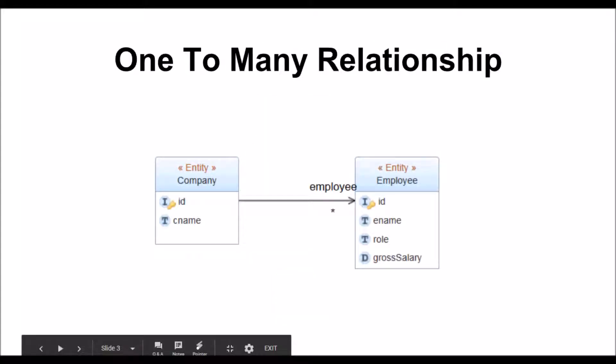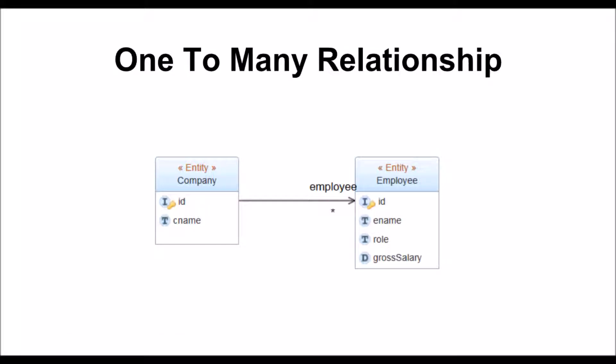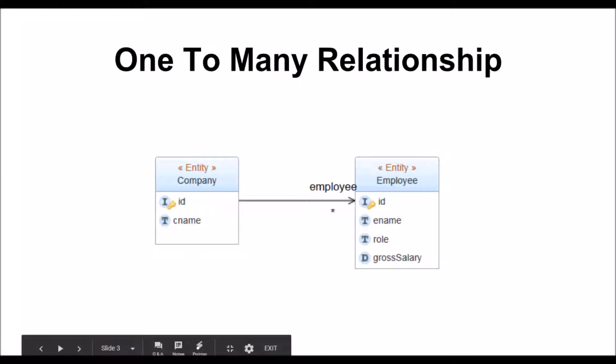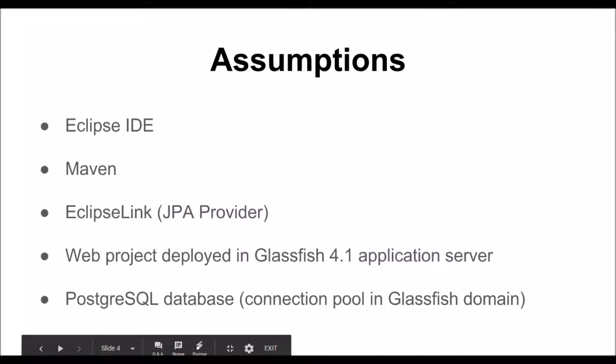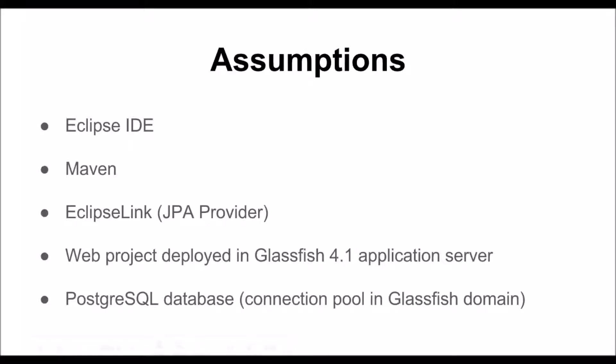In this sample application we will see how to store in a relational database some entities that are in a one-to-many relationship among them. The first one is Company and the second one is Employee, where one employee can work only in one company, but a company can have one or more employees.